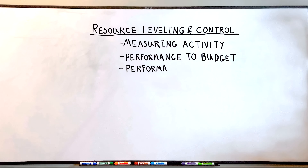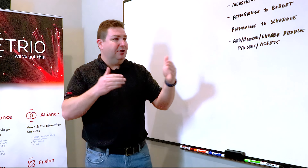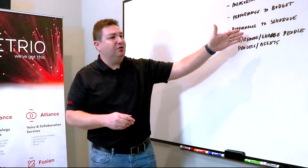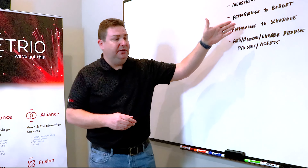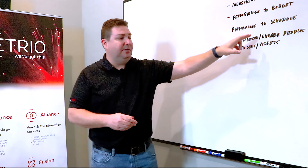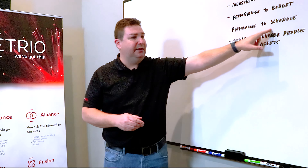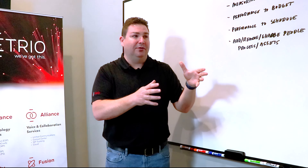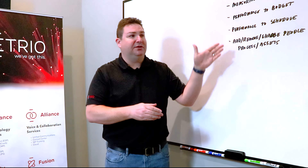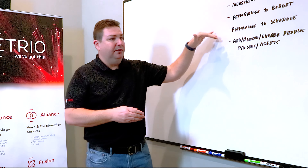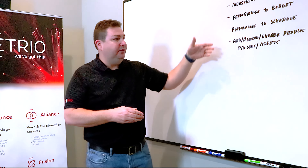We also want to look at performance to schedule. The difference between importance and urgency comes into play here a lot. Our performance to schedule may be more important than our performance to budget. So if I've got a hard deadline — say in an acquisition — and I'm trying to meet a timeline, then maybe my budget can flex a little bit so I can add a resource at an hourly cost into the middle of the project to speed it up or to make sure we hit our timeline. Those are all important attributes of resource leveling.